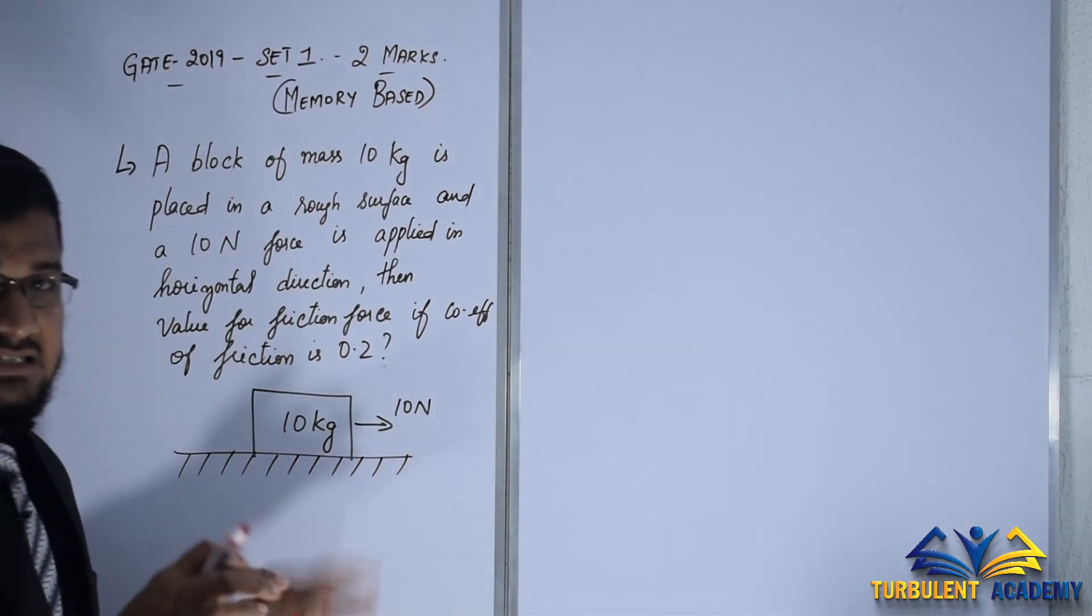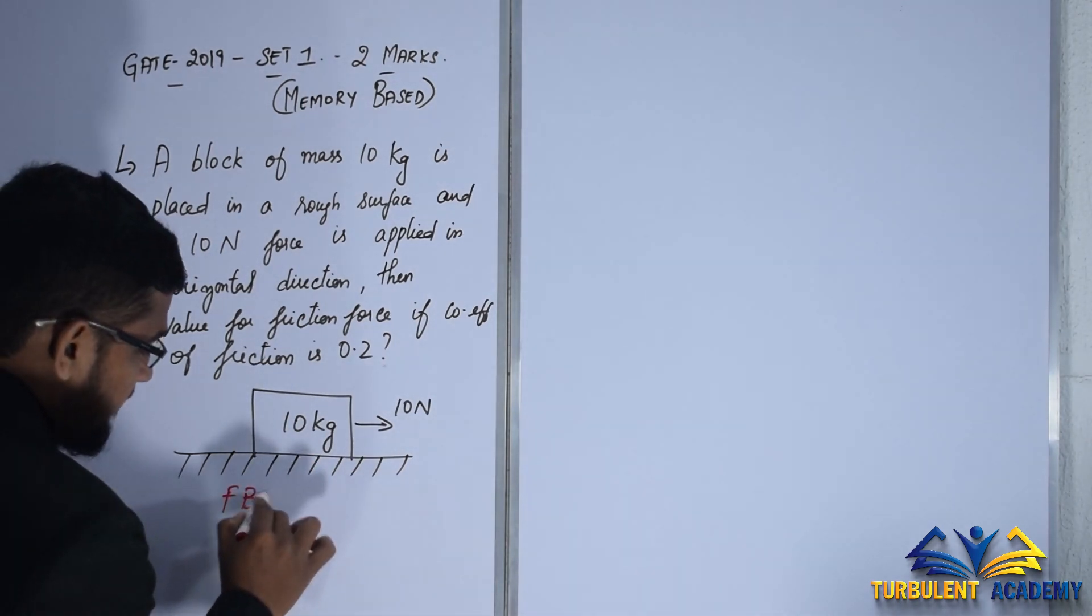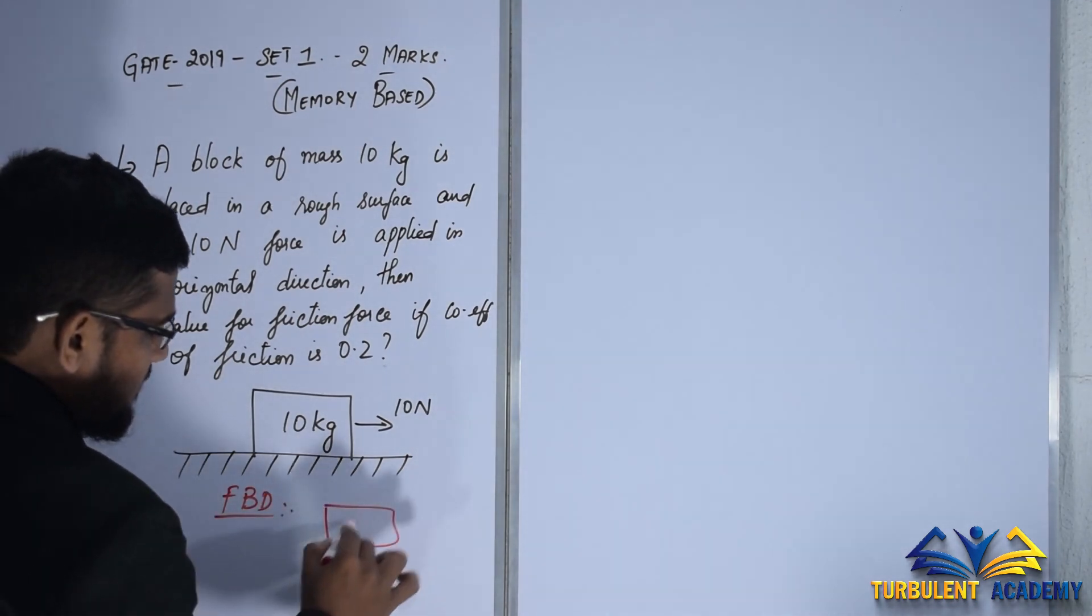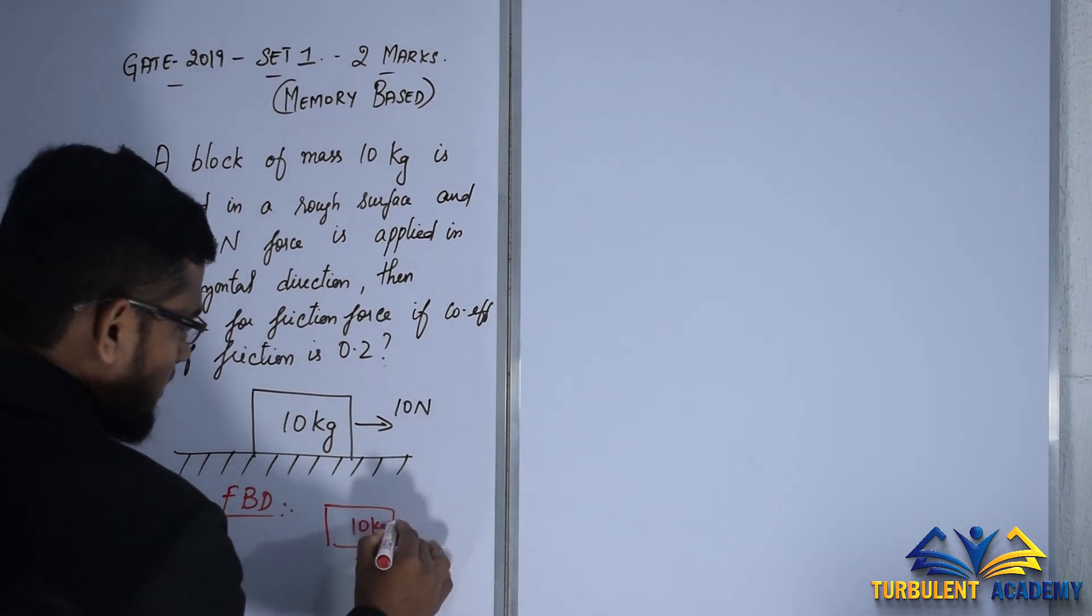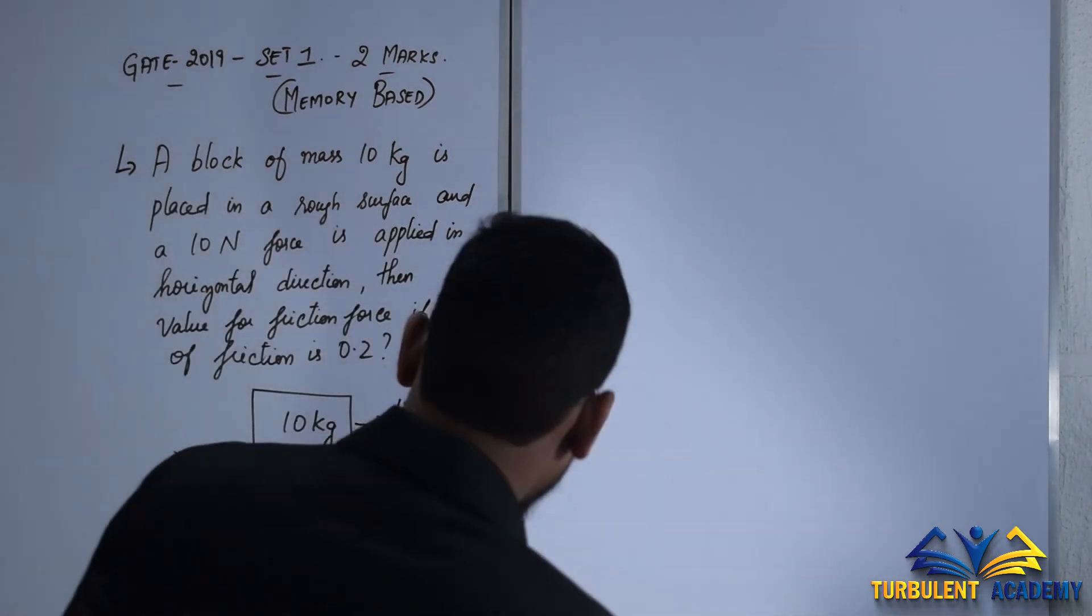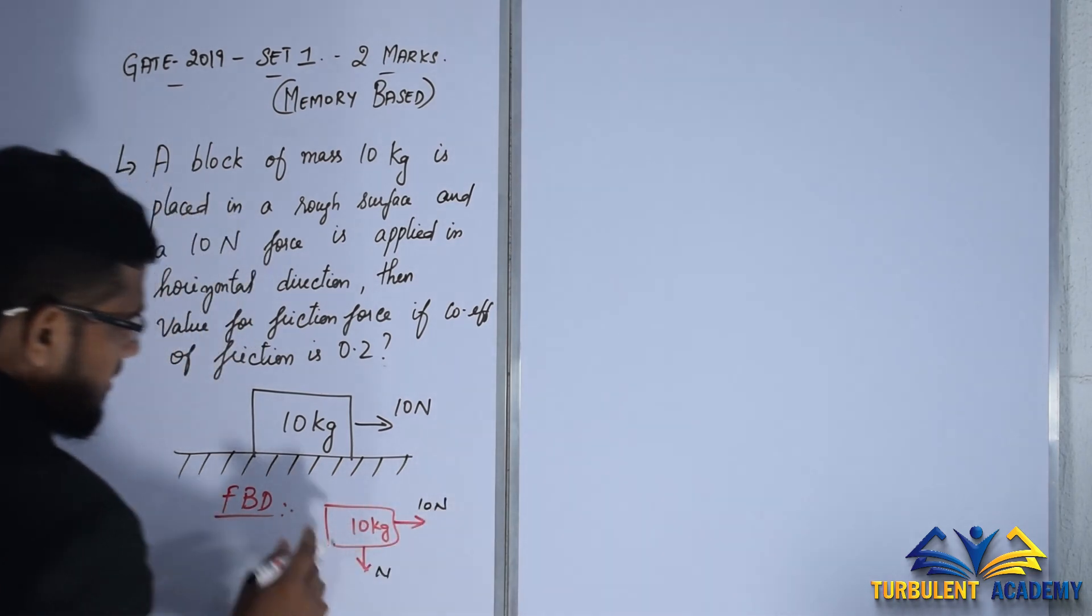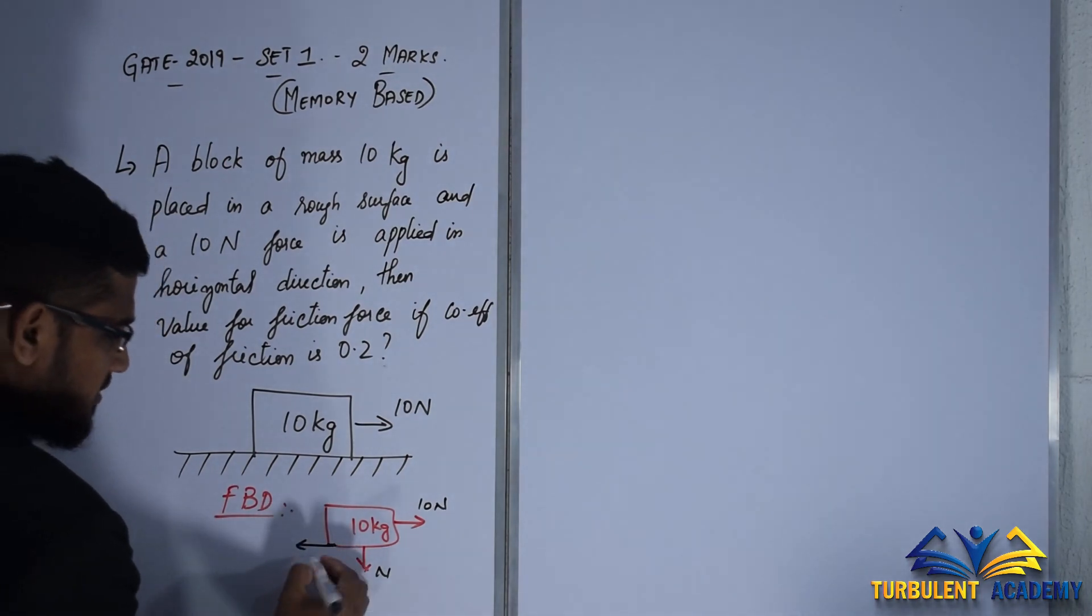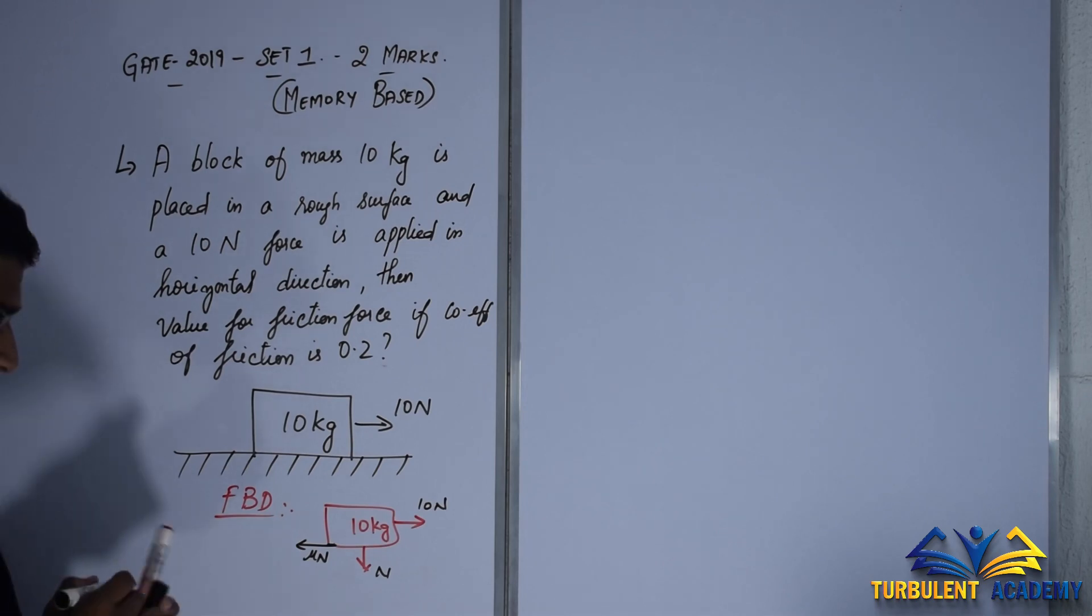As usual, draw a free body diagram. If you draw a free body diagram, we have a 10 kg mass, a normal force, and external horizontal force. This is normal, this is horizontal 10 newton. If this is pushed in this direction, we have a friction force in the opposite direction which is mu N. So this is the free body diagram, very simple.